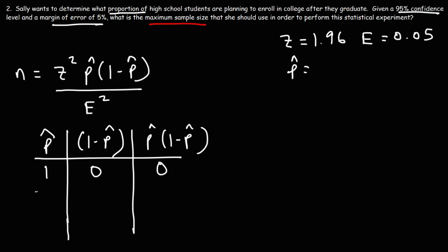Let's say if we were to choose 0.7 then this will be 0.3. 1 minus 0.7 is 0.3. 0.7 times 0.3 that's 0.21. If p̂ was 0.6, 1 minus p̂ will be 0.4. 0.6 times 0.4 is 0.24. Now if p̂ is 0.5, 1 minus p̂ will be 0.5, the product of these two will be 0.25.